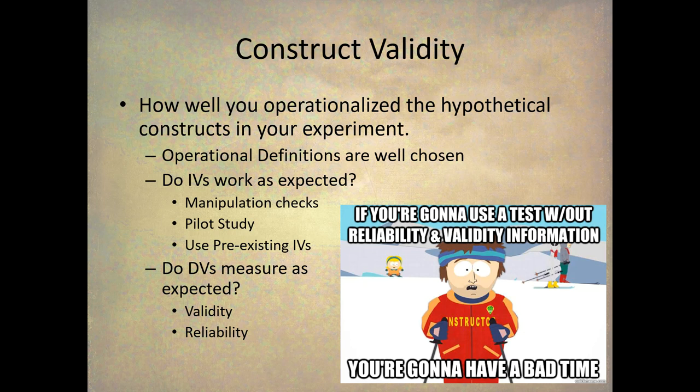We have two sets of constructs that are going to be operationalized in an experiment. One set is the independent variable constructs and the other are the dependent variable constructs. When looking at the IV constructs, these are usually not going to be measured but manipulated. You're creating some type of procedure to create this construct, and one way to make sure the independent variables are working as expected is to do what we call a manipulation check.